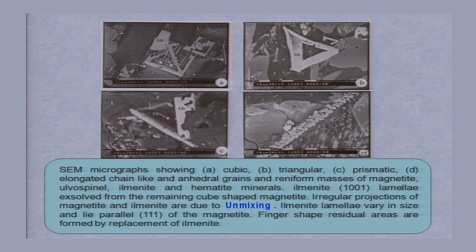All these varieties — cube-shaped, triangular, prismatic, reniform, and chain-like — all varieties of grains can be seen, and they are formed by exsolution between magnetite and ilmenite.